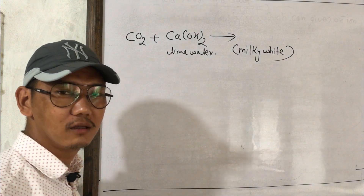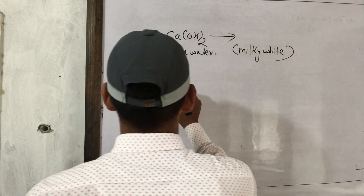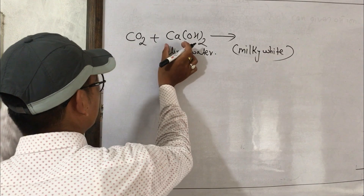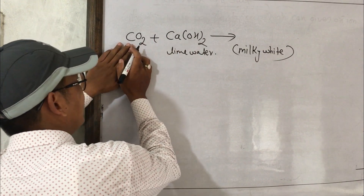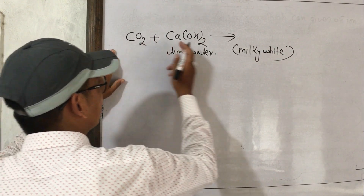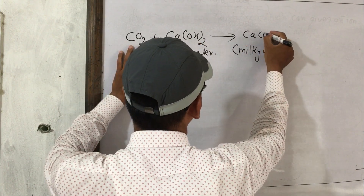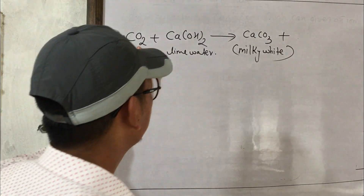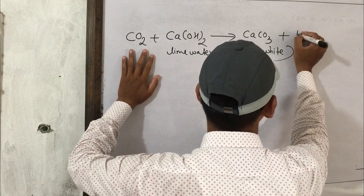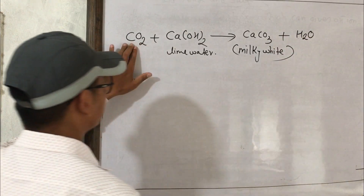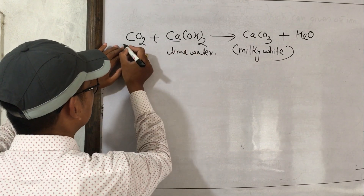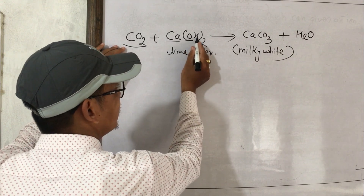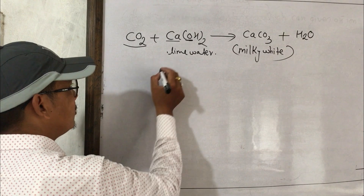The reaction: calcium hydroxide Ca(OH)₂ reacts with CO₂ to form calcium carbonate CaCO₃ plus H₂O. The milky white precipitate is CaCO₃. This milky white color confirms the presence of CO₂ gas.